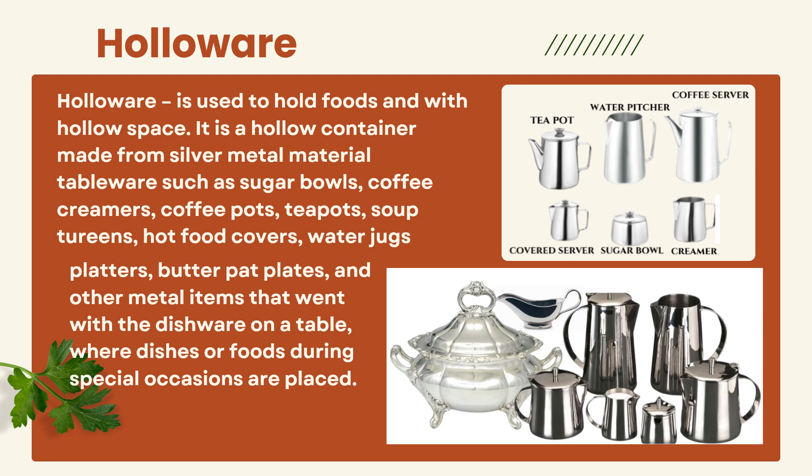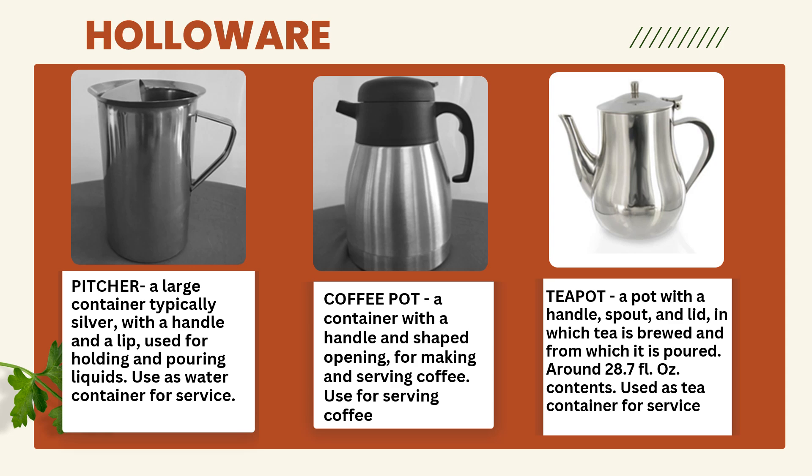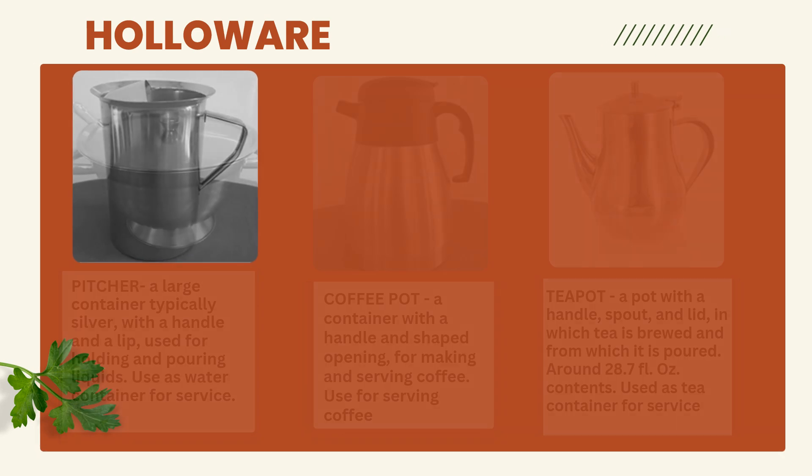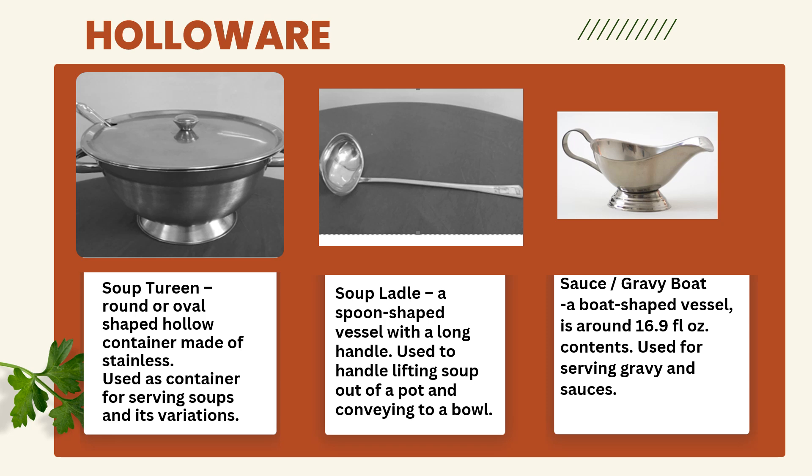Hollowware is used to hold foods and has a hollow space. It is a hollow container made from silver or metal material, including tableware such as sugar bowls, coffee creamers, coffee pots, teapots, soup terrines, hot food covers, water jugs, platters, and butter pat plates. A pitcher is a large container typically silver with a handle and a lip, used for holding and pouring liquids. The coffee pot has a handle and shaped opening for making and serving coffee. The teapot has a handle, spout, and lid, holds around 28.7 fluid ounces, and is used as a tea container. The soup terrine is a round or oval-shaped hollow container made of stainless steel, used for serving soups. The soup ladle is a spoon-shaped vessel with a long handle used to lift soup out of a pot and convey it to a bowl.